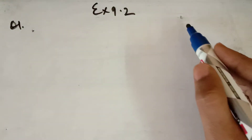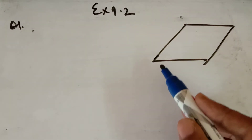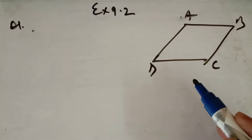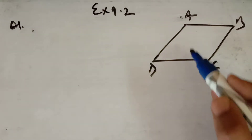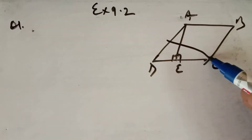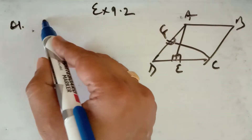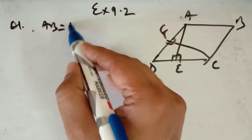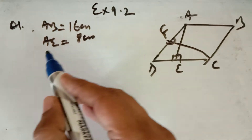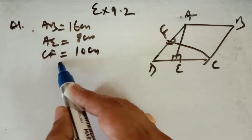In question number 1, it is given in the figure that there is a parallelogram ABCD. In this, AE is perpendicular to DC and CF is perpendicular to AD. It is given that AB is equal to 16 cm, AE is given as 8 cm, and CF is given equal to 10 cm, and you have to find AD.